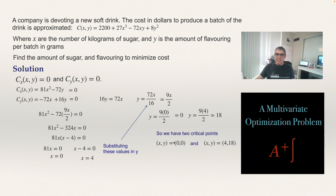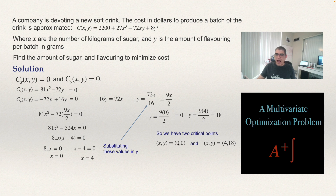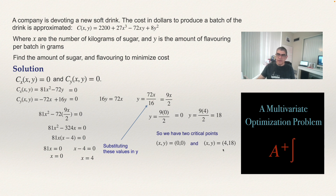The point (0, 0) would mean using no sugar and no flavoring. We'll investigate both points. To determine whether each critical point is a minimum or maximum, we use the second derivative test for multivariate functions — specifically the Hessian, which is the matrix of second derivatives. Let's compute the Hessian at the point (4, 18).